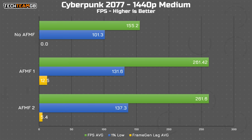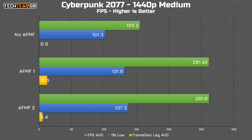Looking at the performance data for Cyberpunk 2077, I'm happy to say it's actually pretty great. Testing on an RX 6900 XT, my base performance on medium settings is a fantastic 155 FPS average, and enabling either AFMF version pegs it to 260 FPS average, making for an exceptionally smooth experience and actually making use of the 240Hz OLED I'm testing on. The real star here is the frame gen lag, which dropped from 12.5 milliseconds with AFMF1 to just 5.4 milliseconds with AFMF2 — a major difference.